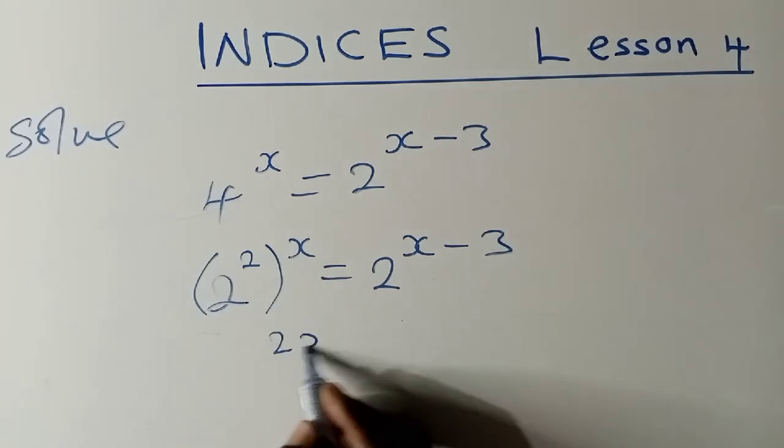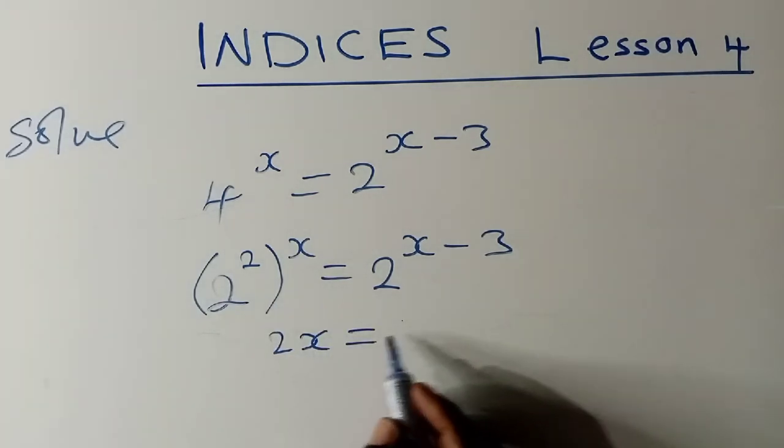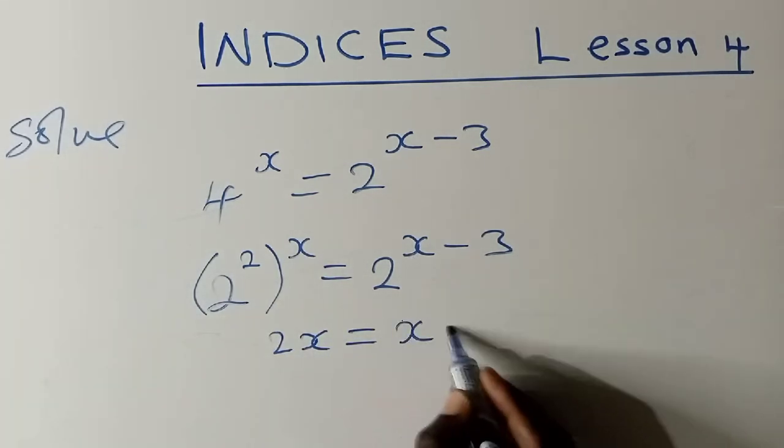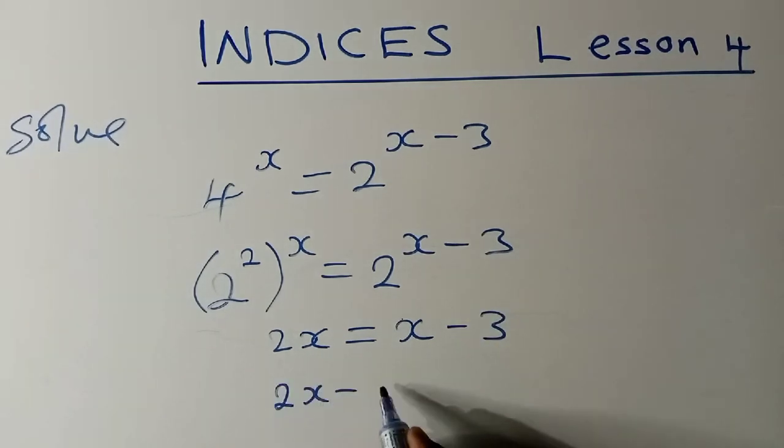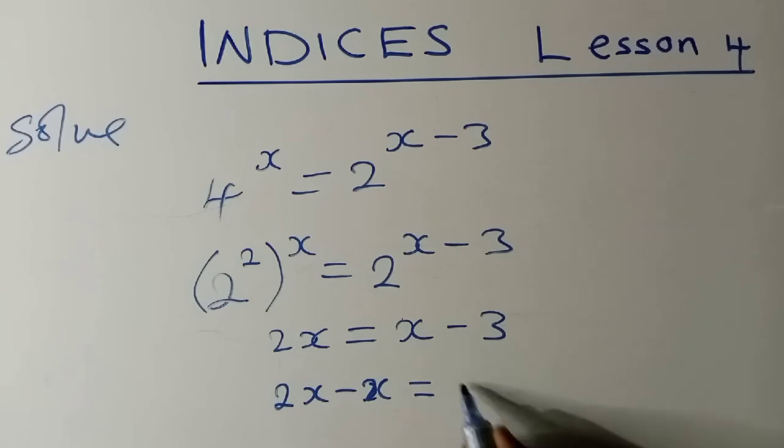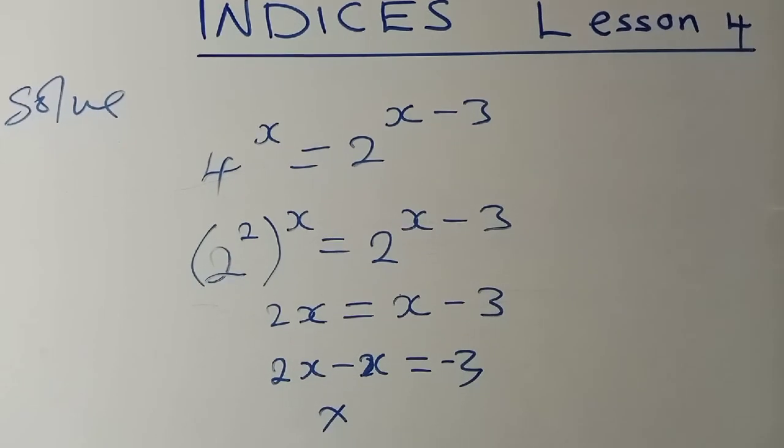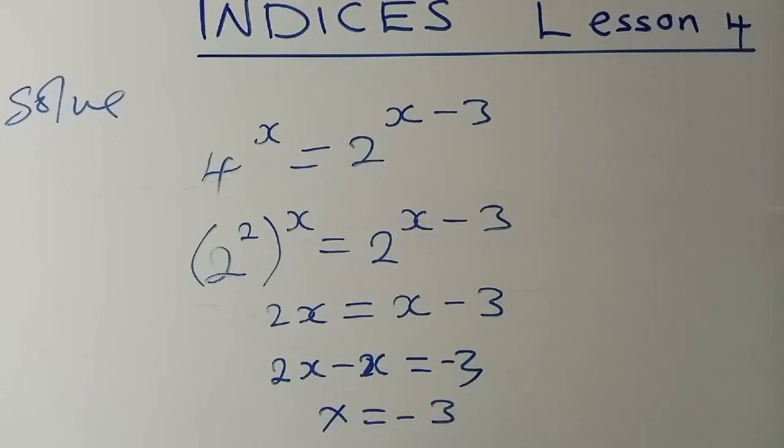You just multiply the powers. 2 times x is 2x, which is equal to, you just get the power which is over here. And then now solve for x. When you solve for x, we'll get something like this. x will be equal to negative 3.